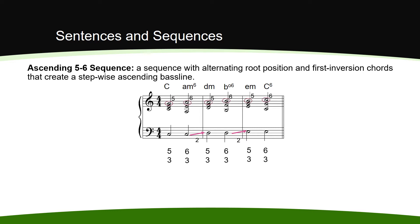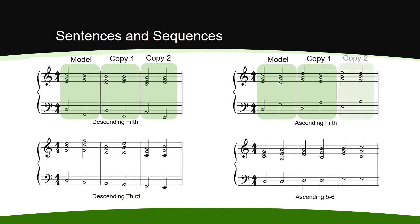Note that each type of harmonic sequence contains at least one model and two copies. Also note that the pattern established in the right hand in the model is then replicated in the copies.